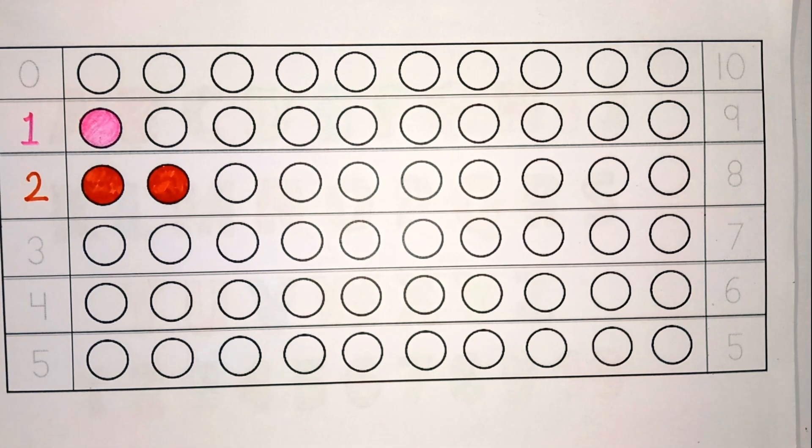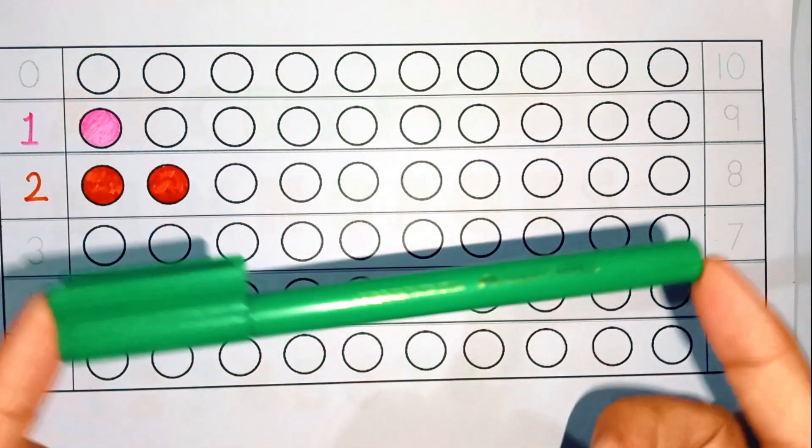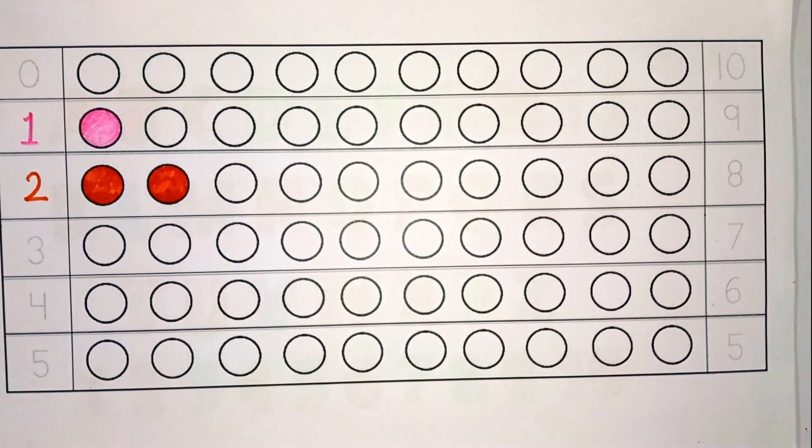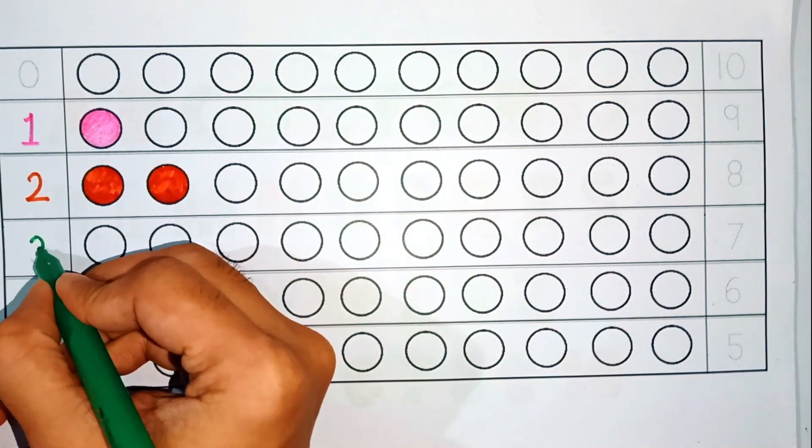A B C D E F G. Dark green color. Number is three.